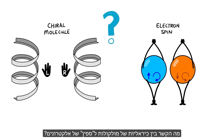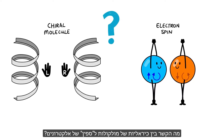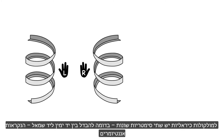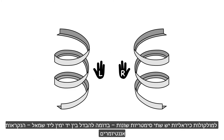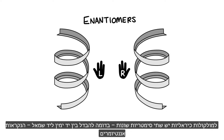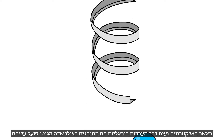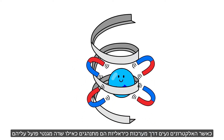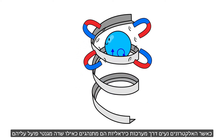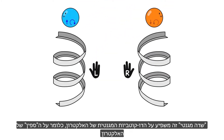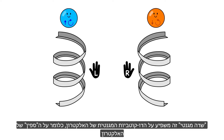How do the chirality of molecules and spin relate? Chiral molecules have two different symmetries, similar to right or left handedness, which are called enantiomers. When electrons are moving through chiral systems, they behave as if there is a magnetic field acting on them. This magnetic field interacts with the magnetic dipole of the electron, namely with the spin of the electron.